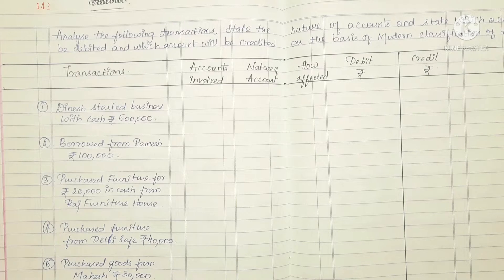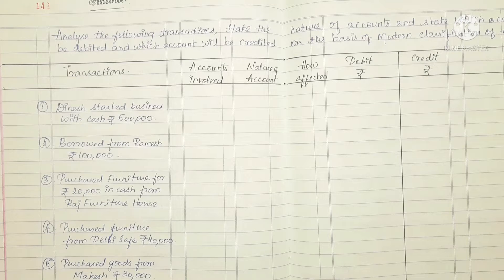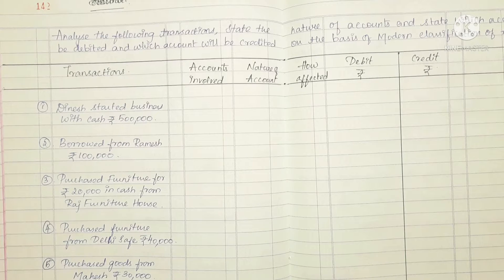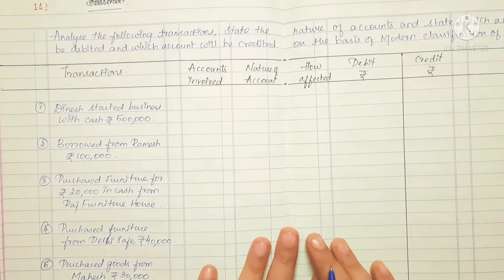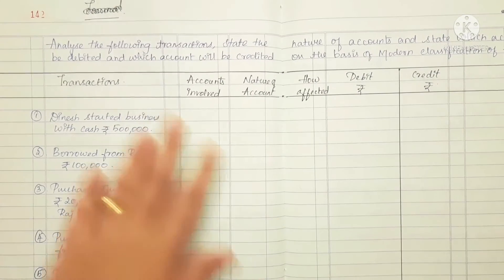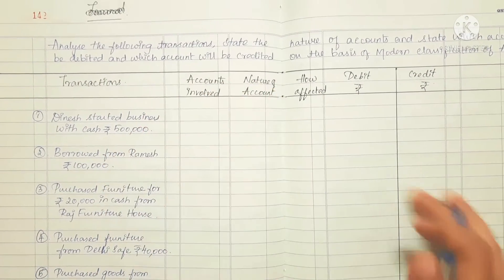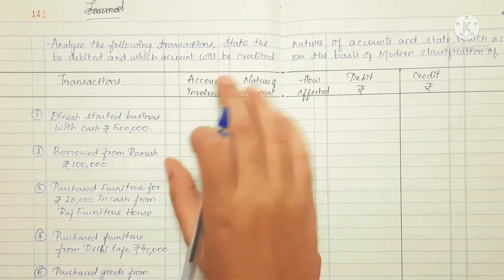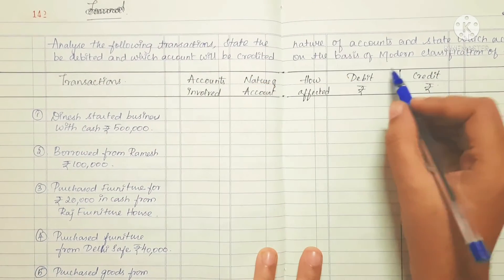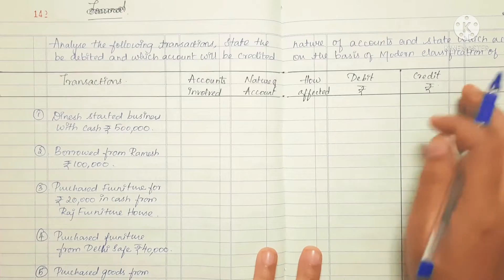Hi friends, welcome back to my channel Sarvi Learner. In this video, we will see the CBSE syllabus for 11th Accounts, Chapter 6. In the last video, we discussed a few topics about modern classification of accounts. Now, the first question: analyze the following transactions, state the nature of account, and state which account will be debited and which account will be credited on the basis of modern classification of accounts.